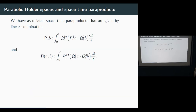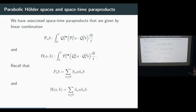Without going into too much technical detail, we can define space-time paraproducts in this setting. The paraproduct of A and B is given as P_t of A times Q_t of B, and the resonant term Q_t of A times Q_t of B. Comparing with the Fourier setting, S_n and P_t play the same role, and Q_t and delta_n play the same role. The paraproducts can look complicated in appearance but are basically the same idea as in the classical Littlewood-Paley setting — just more technical.